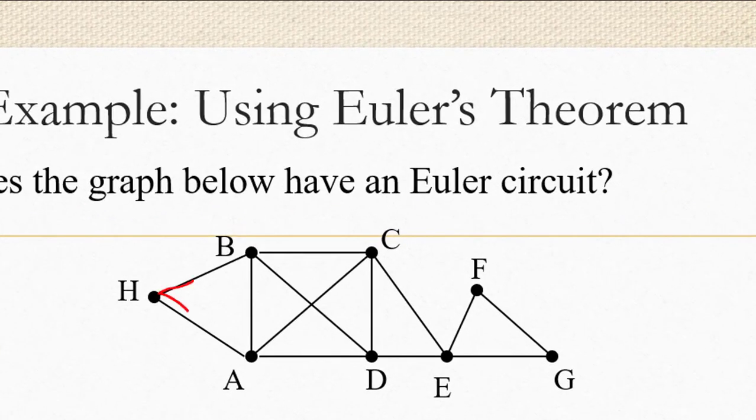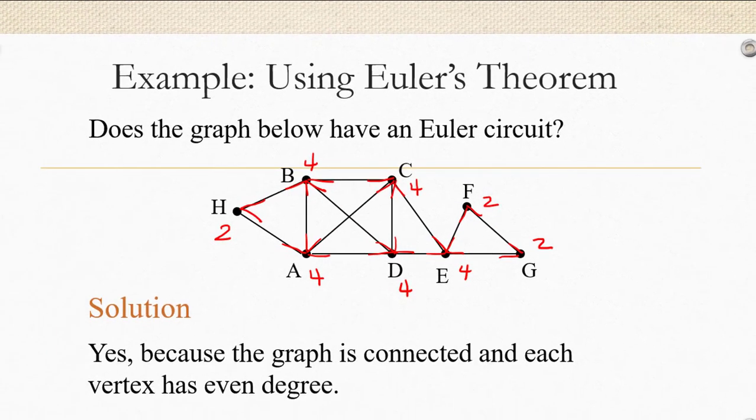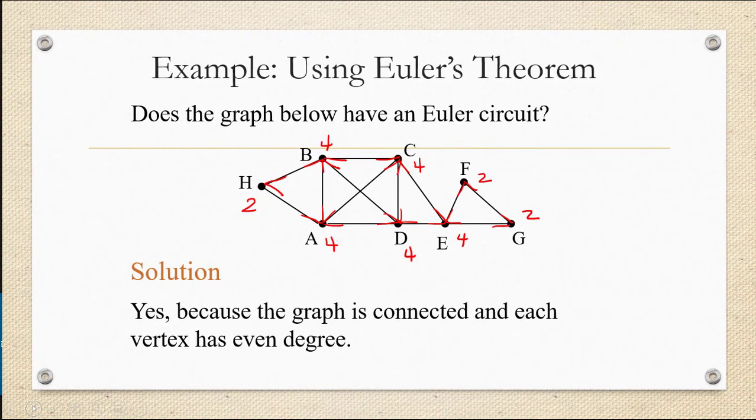H has two edges. A has four edges, even degree. B has four, also even degree. C has four, also even degree. D has four, also even degree. E is degree four as well. F is degree two, which is even. And G is degree two, which is even. So we would have to say yes, because the graph is number one, connected, and two, each vertex has even degree.